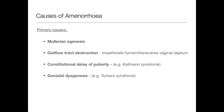Additionally, outflow tract obstructions — so imperforate hymens, transverse vaginal septums — basically blockage of the actual menses coming out. Constitutional delay of puberty is an important one, linked particularly with a syndrome called Kallmann syndrome. And finally, gonadal dysgenesis, which can also be linked with Turner syndrome. These are the main primary causes, and these patients tend to never have established a period.